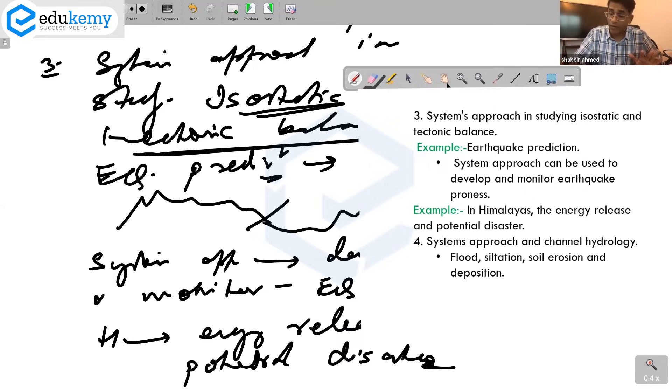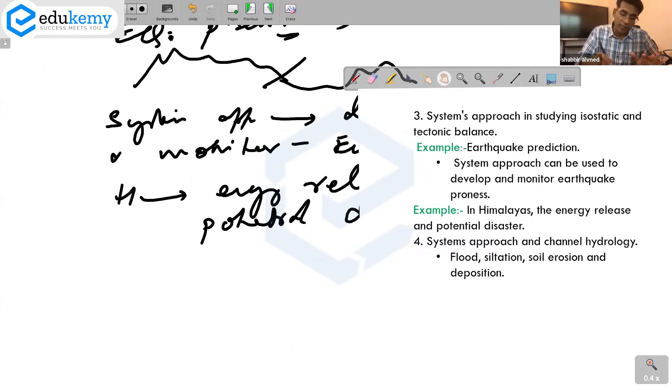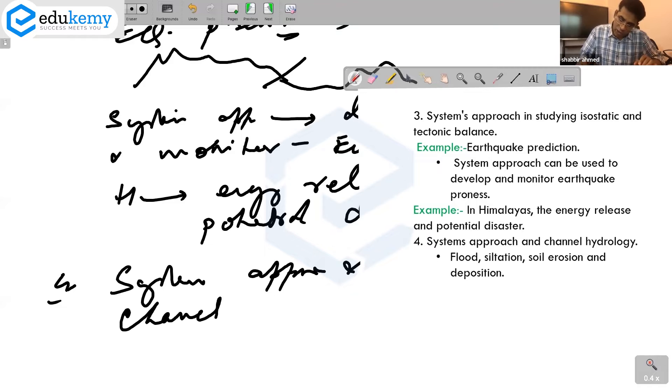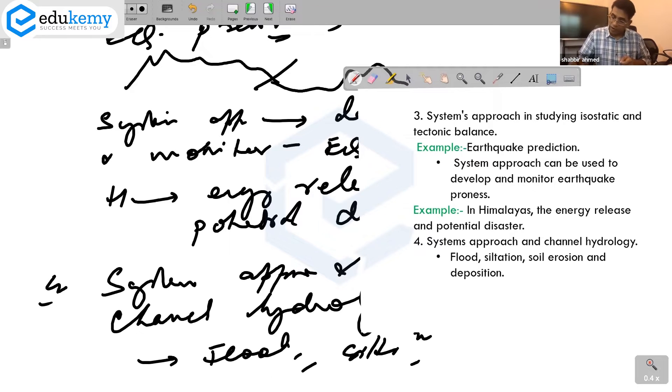One more point - the fourth point is systems approach and channel hydrology. We're talking about floods, siltation, soil erosion and deposition. Systems approach is also used in channel hydrology.